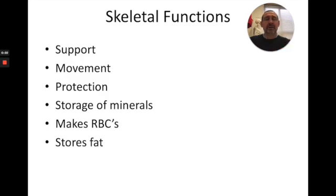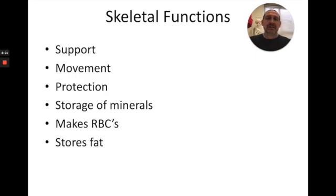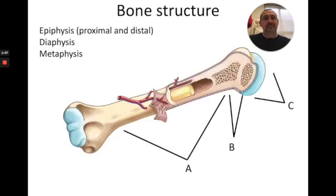Other functions include protection of your soft organs like your brain, heart, or lungs; storage of minerals, namely calcium and phosphorus; making red blood cells — erythrocytes — from red bone marrow; and then storing fat in yellow bone marrow.